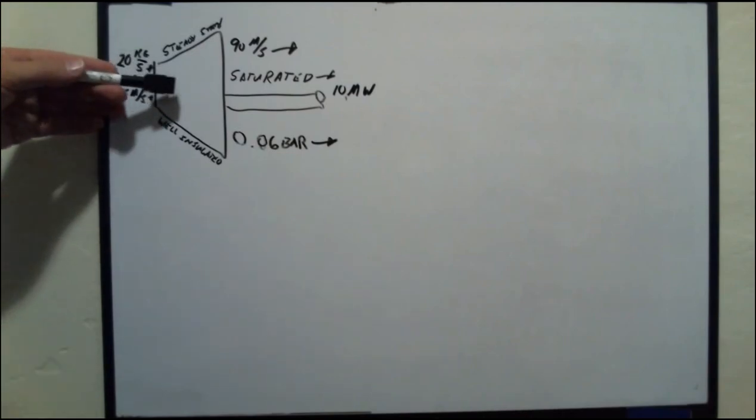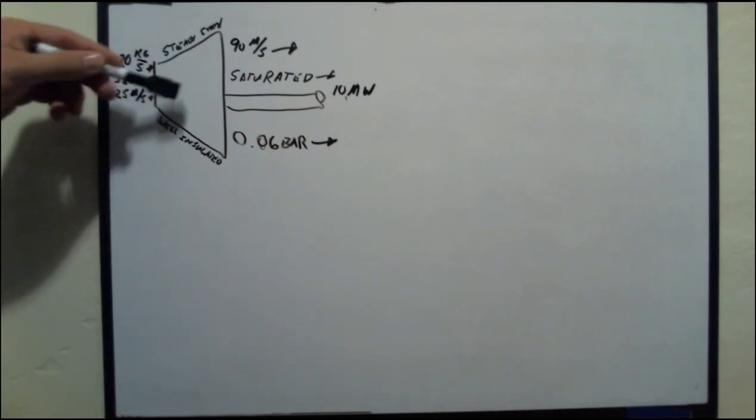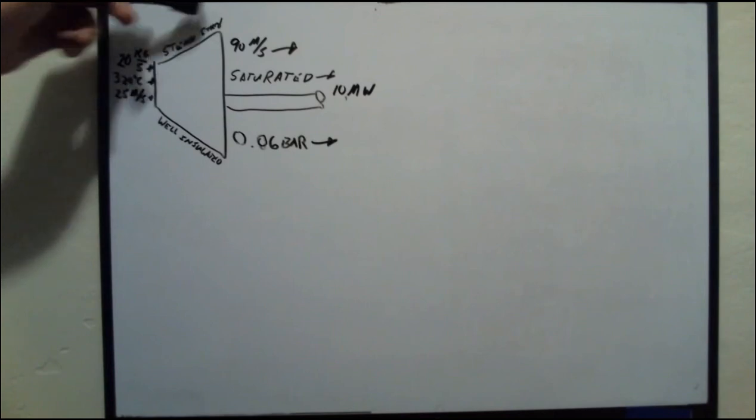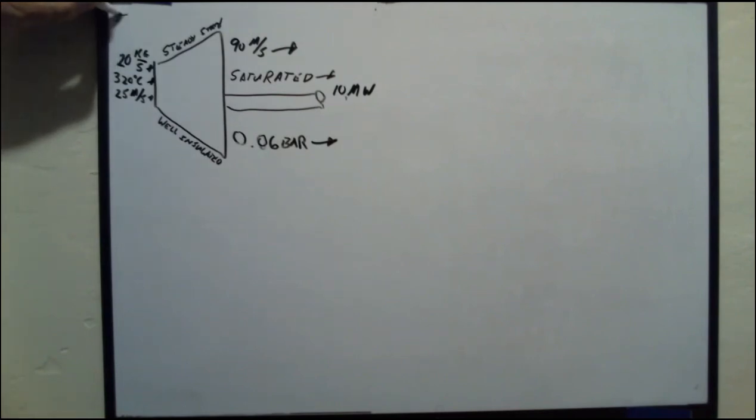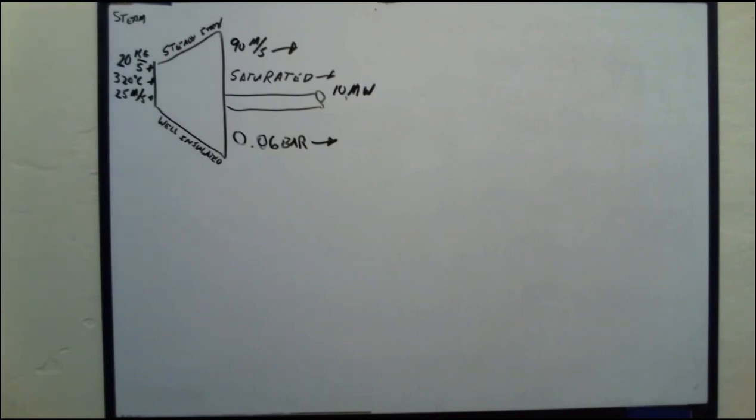What do we got? I've got a turbine that is well insulated in the housing and has a steady state, so the derivative of the properties of the system with respect to time is zero. We have a mass flow rate of 20 kilograms per second, a temperature of 320 degrees Celsius, and a velocity of 25 meters per second. I should also say that this is steam because it does matter what material it is.